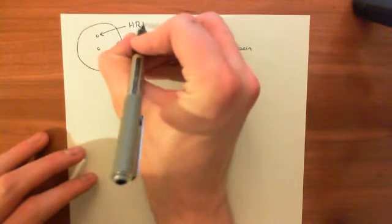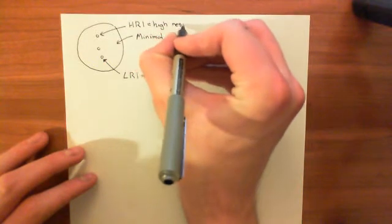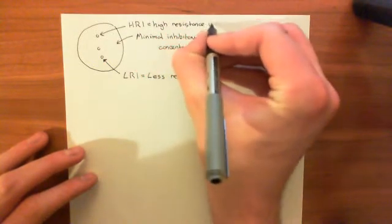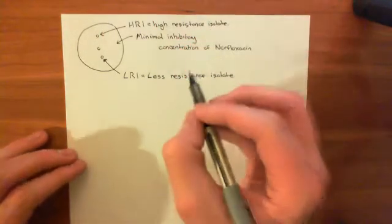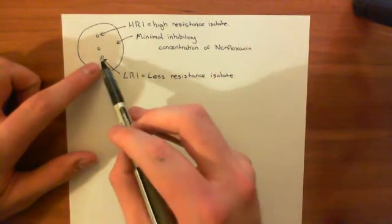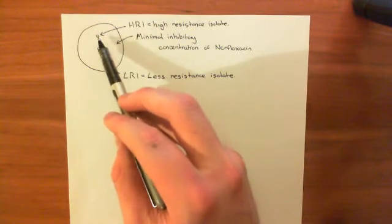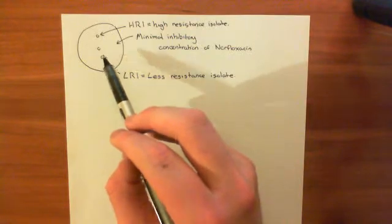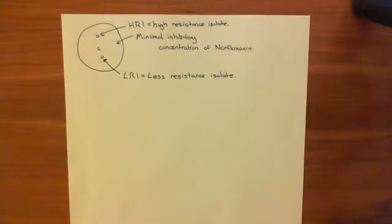So let's say this is an HRI, standing for high resistance isolate. What I'm trying to say here is that putting this bacteria which is susceptible to norfloxacin on a culture plate with a bacterium that is resistant to norfloxacin is going to make this one also resistant to norfloxacin to some extent. And I want to now explain why.